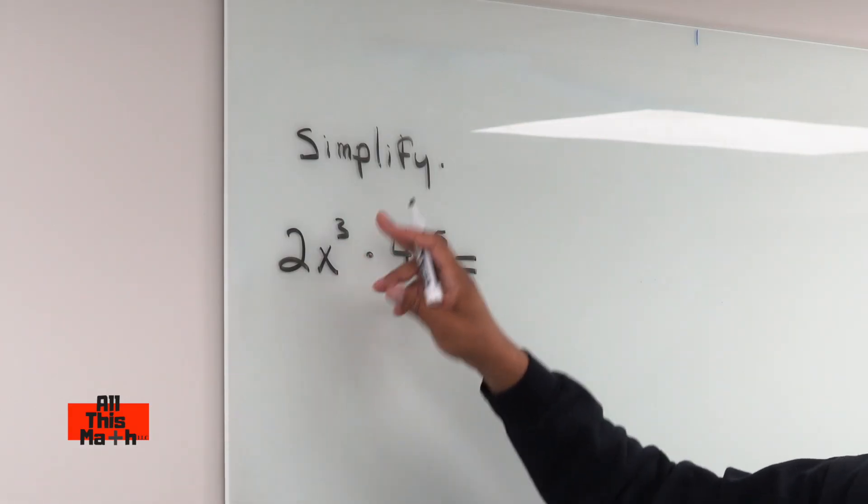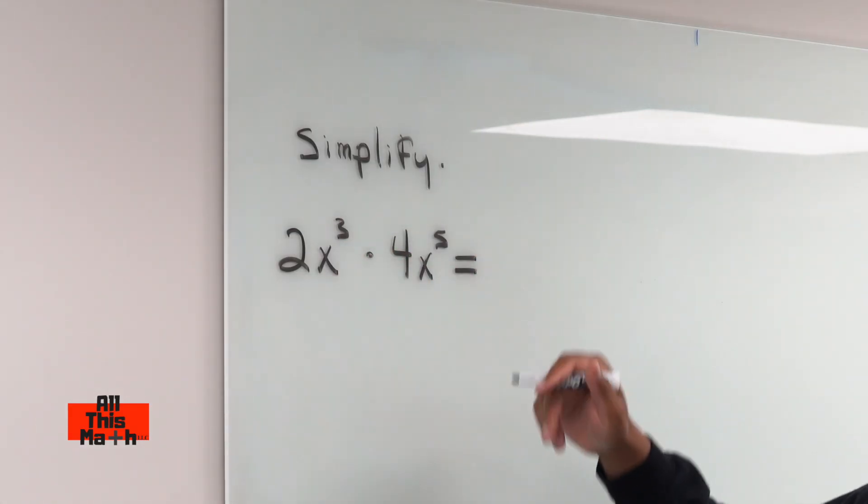So we have 2x cubes, and we have 4x to the fifth. So we do 2 times 4, which gives us 8.